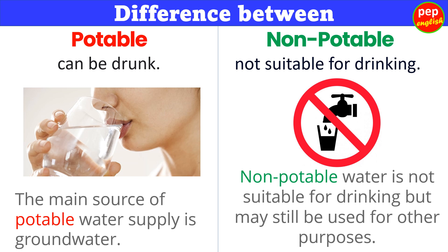Difference between potable and non-potable. Potable means it can be drunk. Example: The main source of potable water supply is groundwater. Non-potable means it is not suitable for drinking. Example: Non-potable water is not suitable for drinking but may still be used for other purposes.